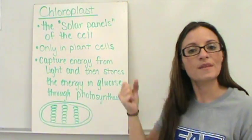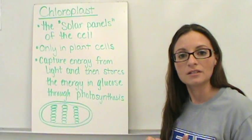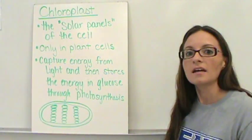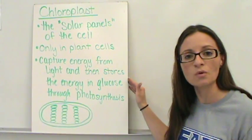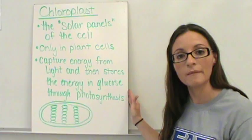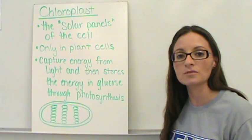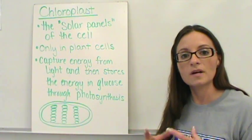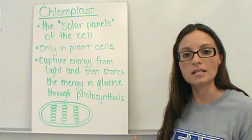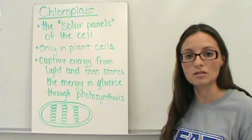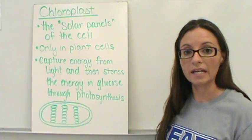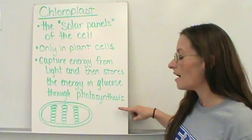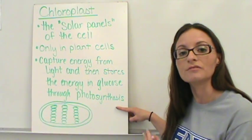They absorb that light energy that's coming in, and they are then able to take that light energy, store it in a glucose molecule that they make, and then those glucose molecules get stored in the plants. So that when animals that need the energy eat those plants or eat other things that have these glucose molecules stored in them, we can actually get the energy that we need. And that process is called photosynthesis.